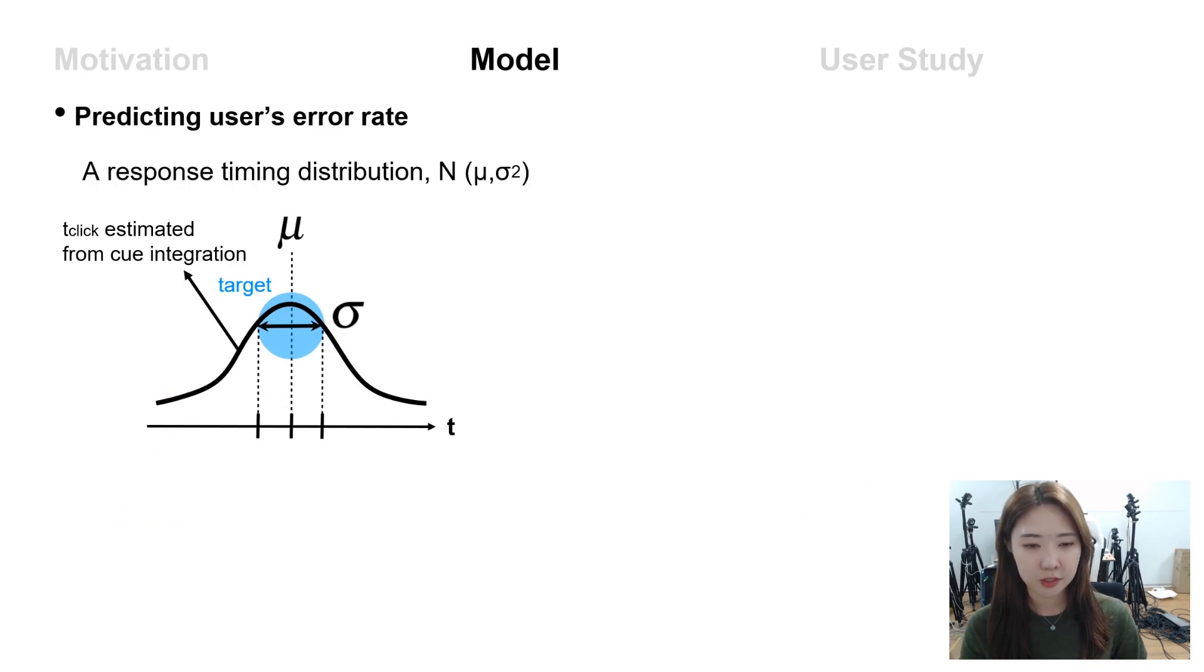As a result, in the tracking and click process, the user clicks the button at the estimated timing based on the integrated perception. And the response timing distribution shows a Gaussian distribution with a specific mean and a deviation.